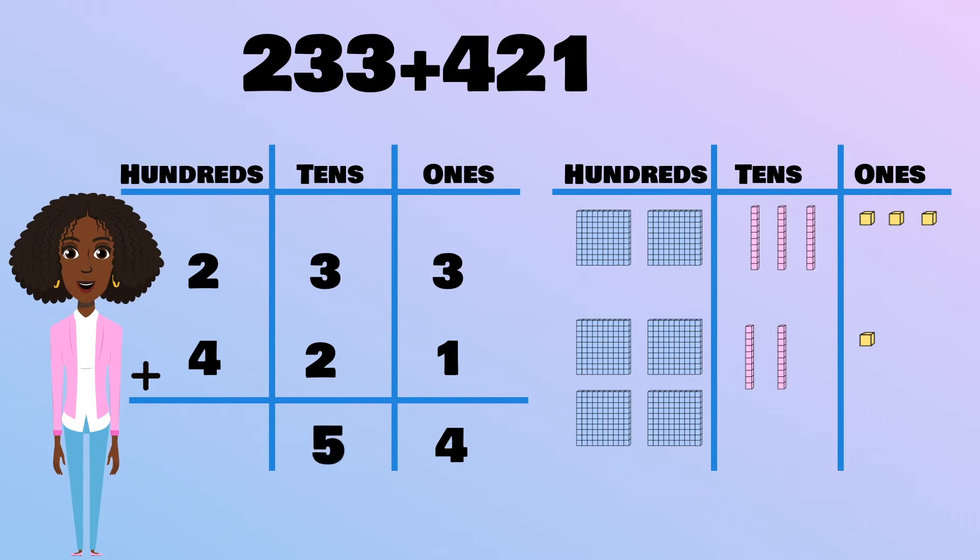And finally, I will add the hundreds place. 1, 2, 3, 4, 5, 6. Now, I can see that 233 plus 421 equals 654.